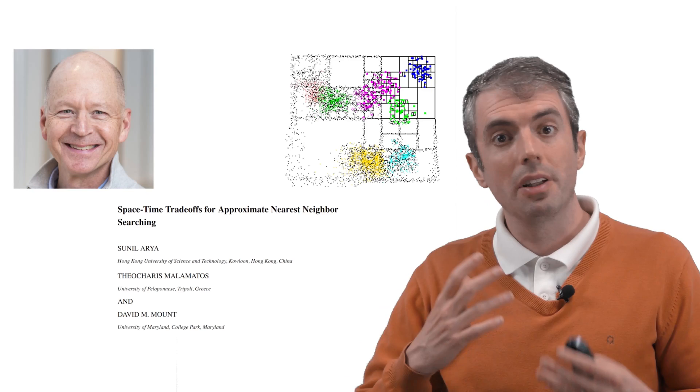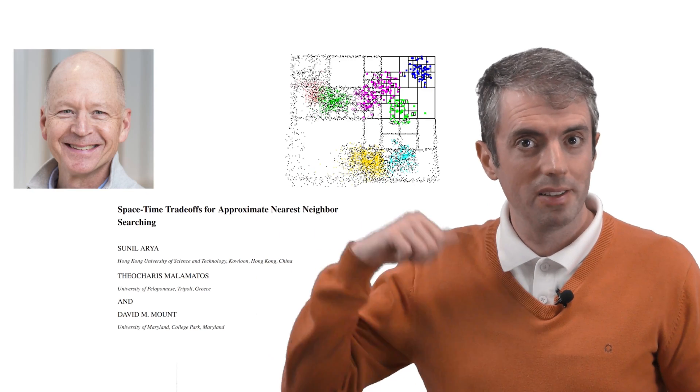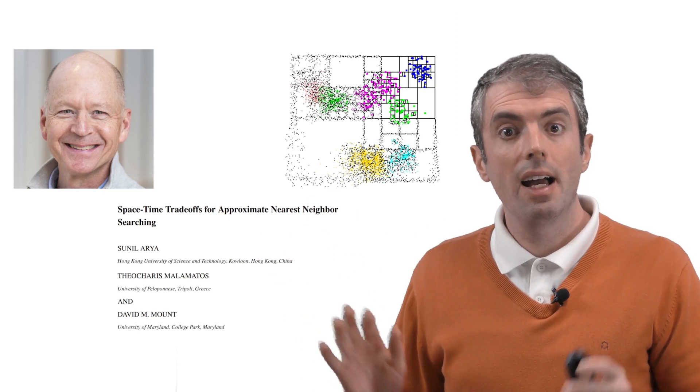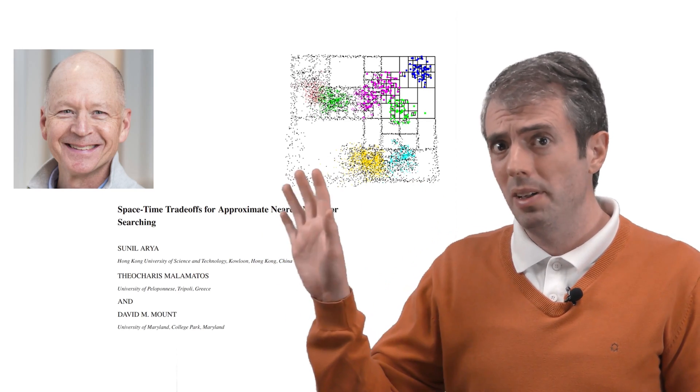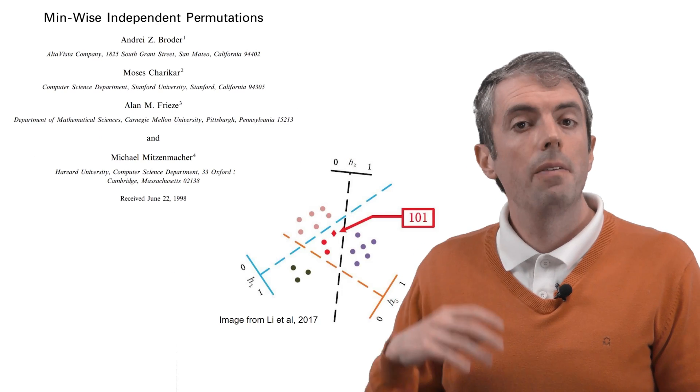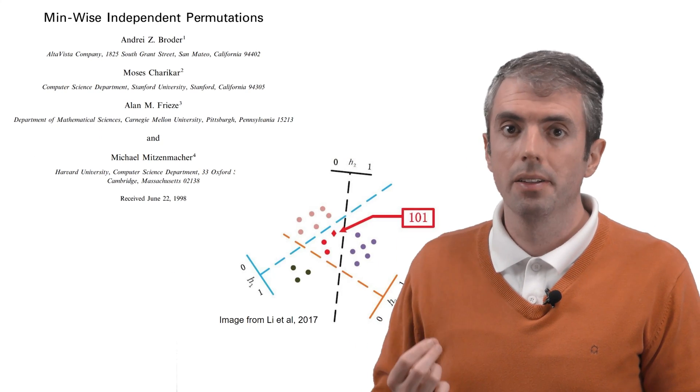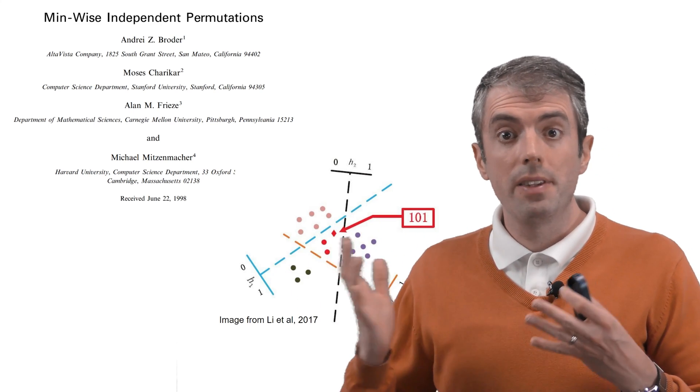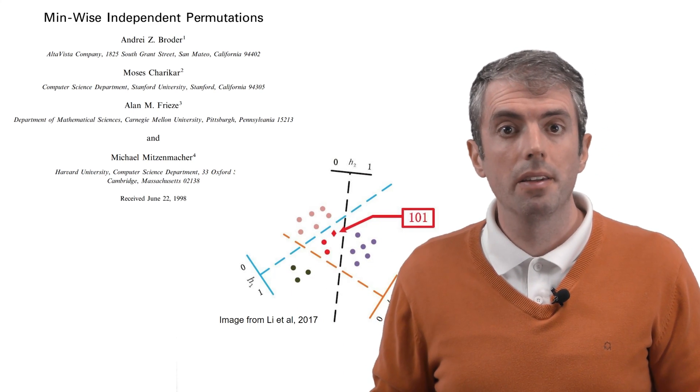There are good algorithms for searching through this space, however, made by Maryland's own David Mount, but you can't do it exactly. Once the dimensionality gets high enough, you're going to have to do some sort of approximate search for the nearest neighbors. If you can't do an exact search in high dimensions, then why keep all of these dimensions around in the first place?